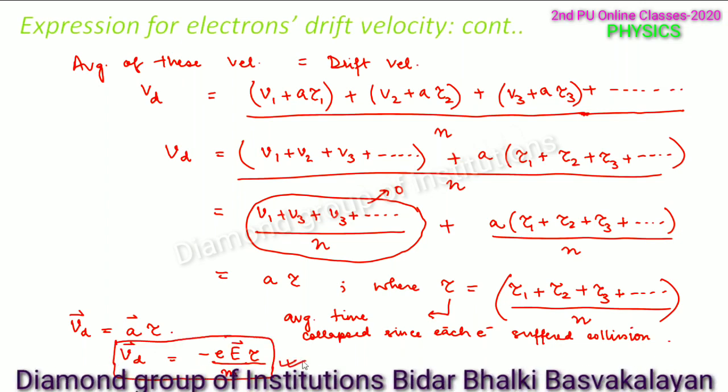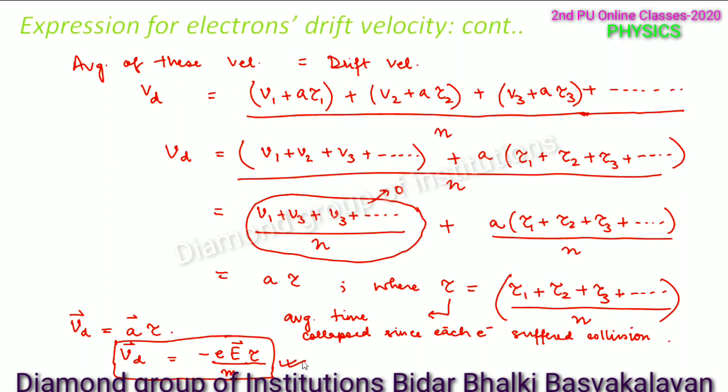The drift velocity is directly proportional to the applied electric field, directly proportional to the average time elapsed between collisions (tau), and inversely proportional to the mass of the electron. This is how we calculate drift velocity for electrons.